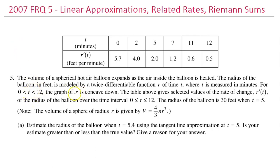The setup of this problem has a lot of words in it, so just let it wash over you as we read through it the first time. We will go back and pick out the parts we need for each problem as we go forward. The volume of a spherical hot air balloon expands as the air inside the balloon is heated. The radius of the balloon in feet is modeled by a twice-differentiable function r of time, where t is measured in minutes. For the interval from 0 to 12, the graph of r is concave down. The table above gives selected values of the rate of change r prime of t of the radius of the balloon over the time interval from 0 to 12.